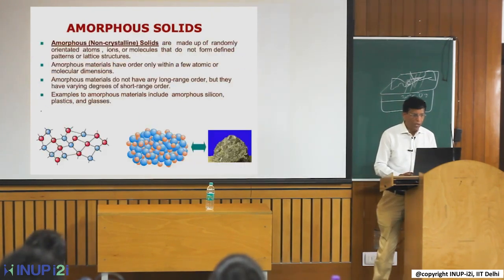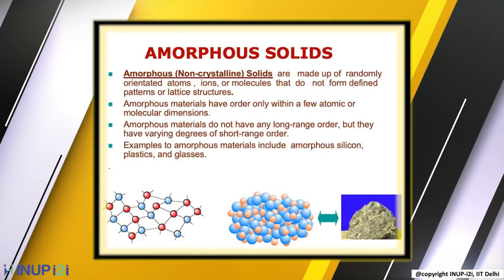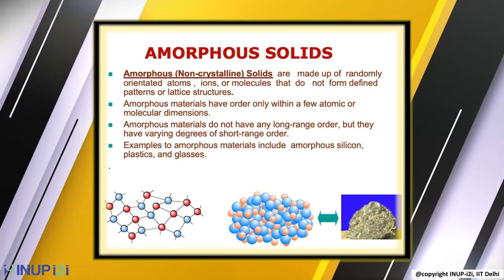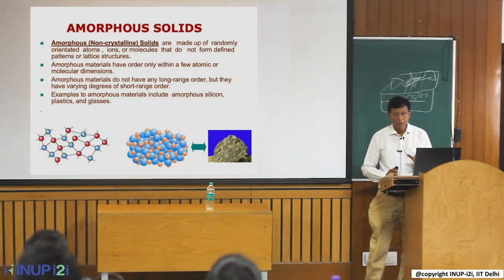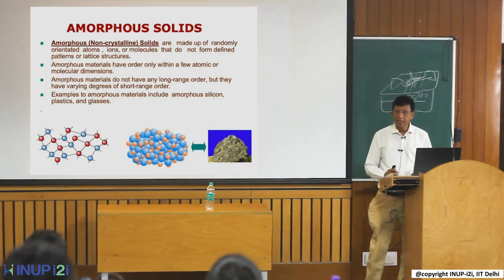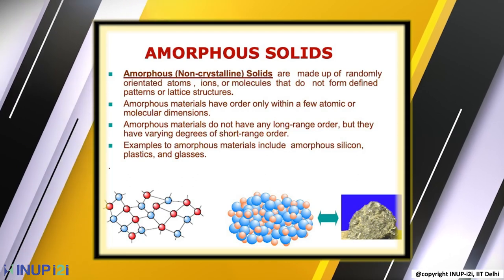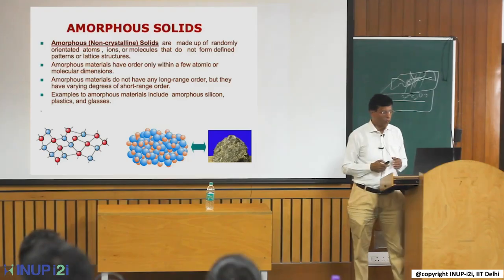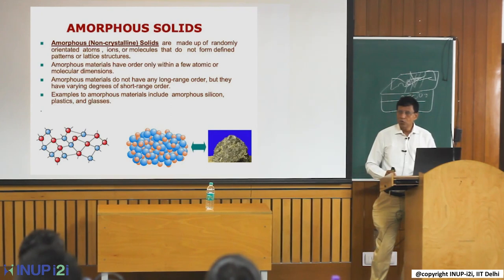Apart from that, you have amorphous material. As the name tells, there is no ordering at all — no crystallinity. Sometimes materials occur naturally amorphous, but it is very difficult to get truly amorphous form. You need a lot of effort to make a single crystal and also a lot of effort to make an amorphous one. For both, special efforts are required. But most materials we see in day-to-day life are polycrystalline.